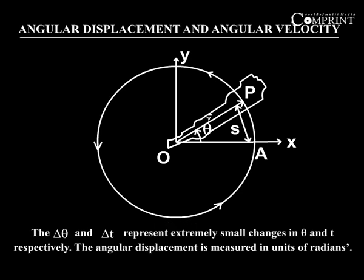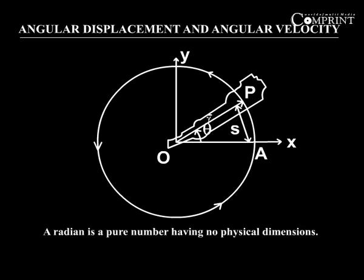The delta theta and delta t represent extremely small changes in theta and t respectively. The angular displacement is measured in units of radians. A radian is a pure number having no physical dimensions.